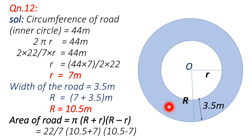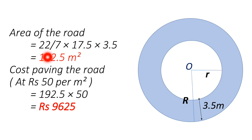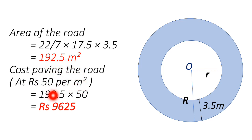Using the formula, area of the road = π(R + r)(R - r) = (22/7) × (10.5 + 7) × (10.5 - 7), which calculates to 192.5 square meters. The cost of paving is 50 rupees per square meter, so total cost = 192.5 × 50 = rupees 9625.